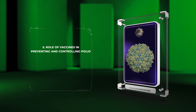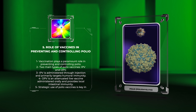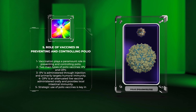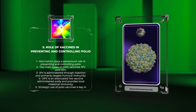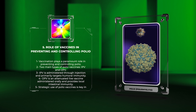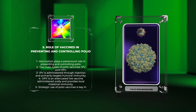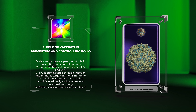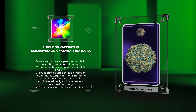Vaccination plays a paramount role in preventing and controlling polio. Two main types of polio vaccines are used: the inactivated poliovirus vaccine, IPV, and the oral poliovirus vaccine, OPV. IPV, composed of inactivated poliovirus strains, is administered through injection. It induces a robust immune response, primarily targeting humoral immunity, and is predominantly used in countries with a low risk of poliovirus transmission.